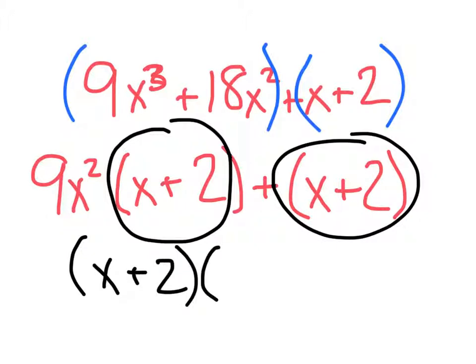But then, what's going to go in this parenthesis? 9x², which is from right here, but then there's no term to put right here.